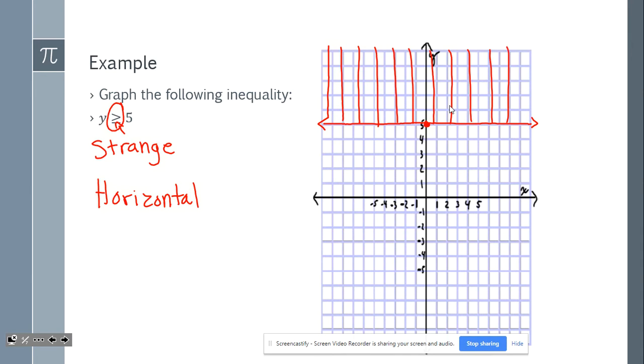So I'm going to shade this portion of the graph. Now, you can use lines, you can color it in, you can do whatever you wish so that you are labeling the solution set. Make sure that you have a label of the line that you just drew. y is greater than or equal to 5.